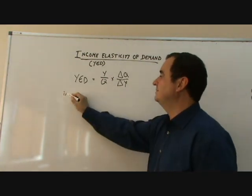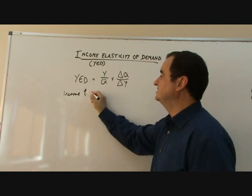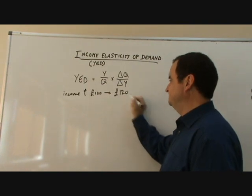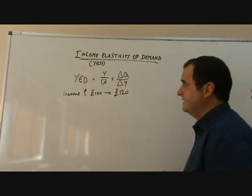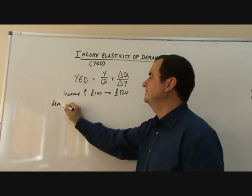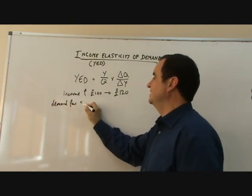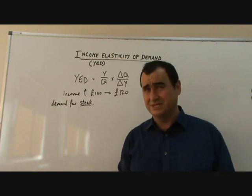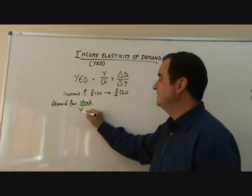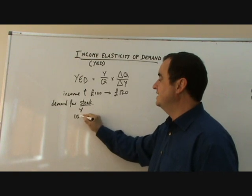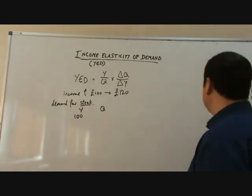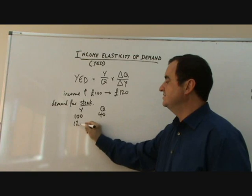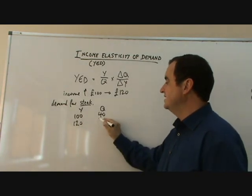Let's imagine that my income rises from £100 to £120, and let's explore what happens to my demand for steak. I like steak, but I just can't afford to buy as much of it as I'd like. Let's draw this as a table. When my income was £100, the quantity of steak I was buying was 40. When my income goes up to £120, the quantity I'm buying is now 60.